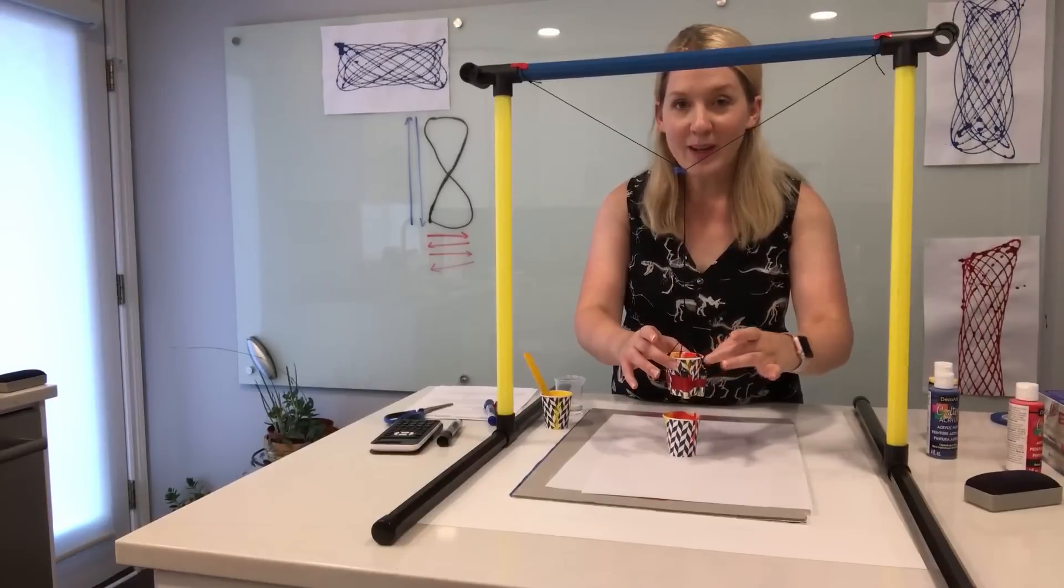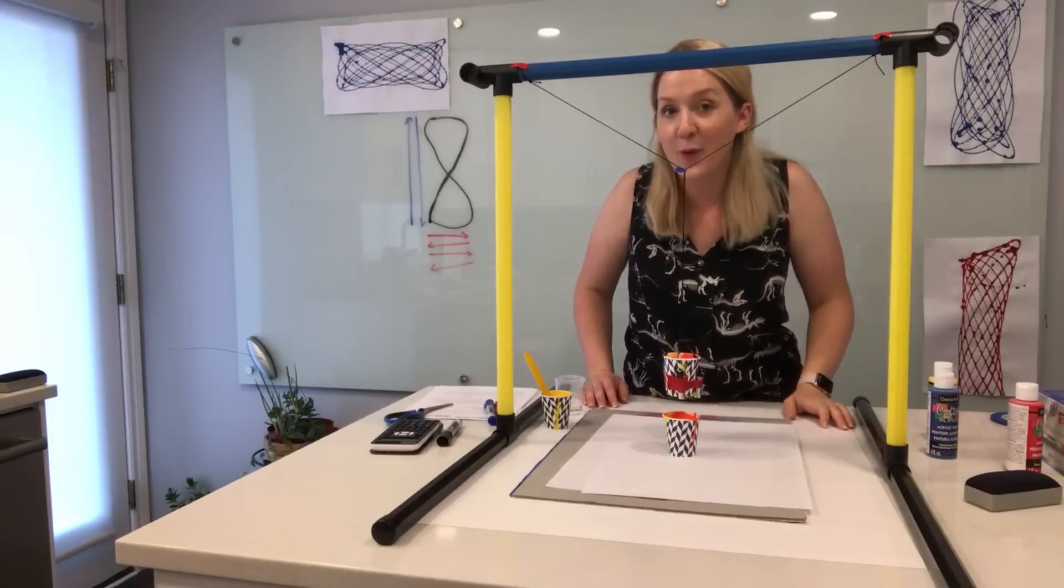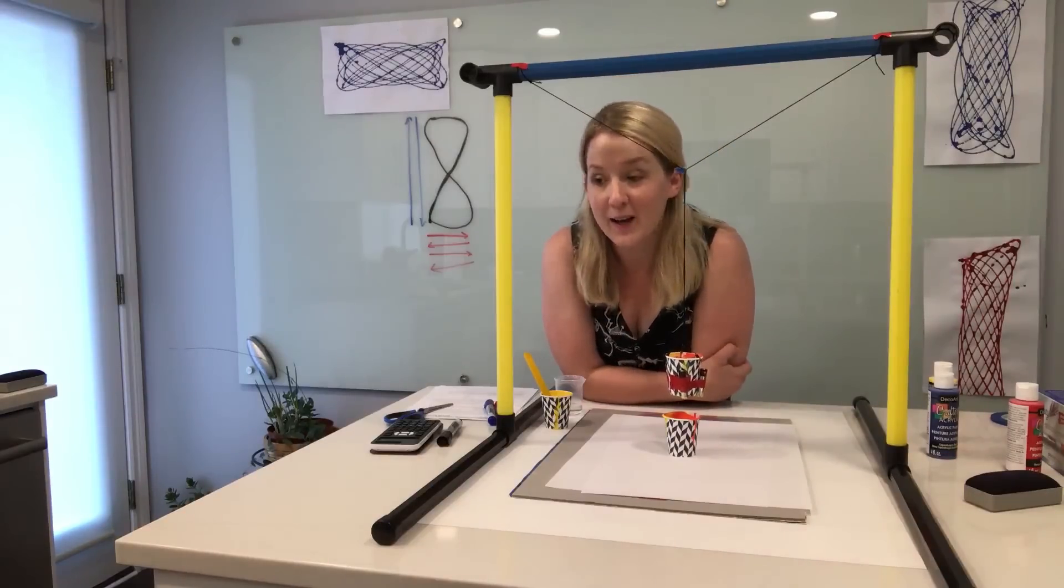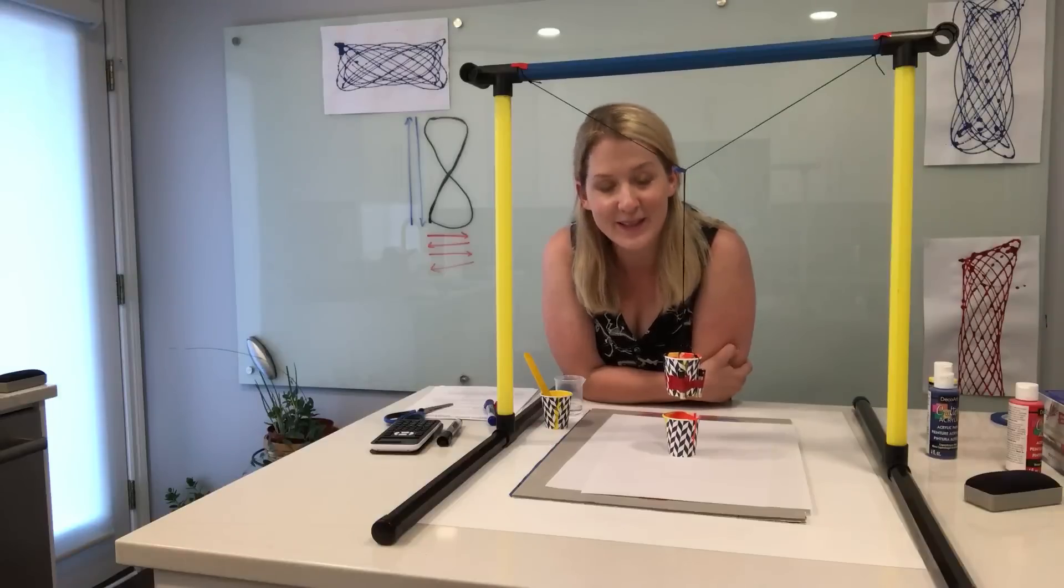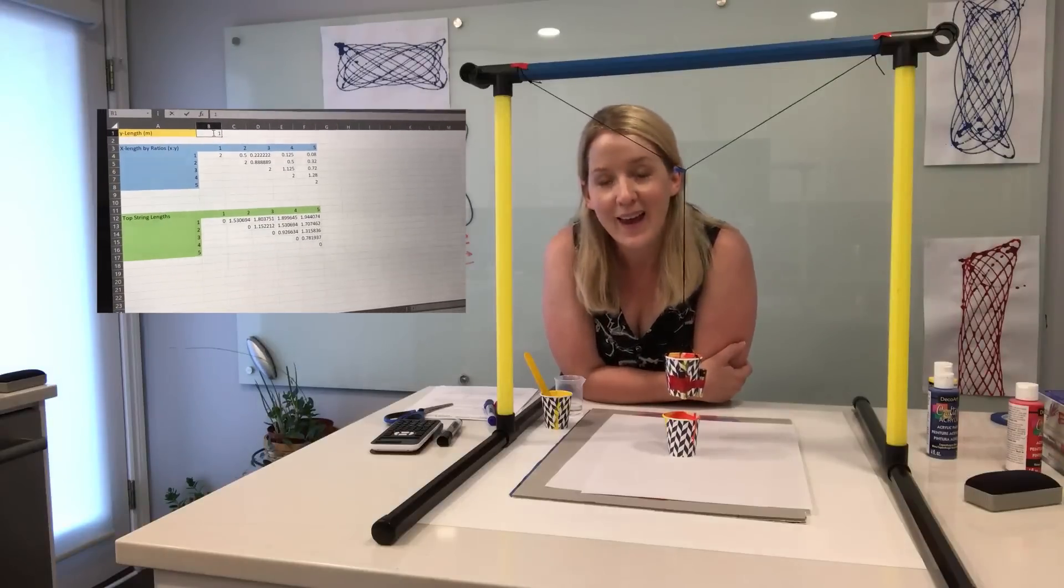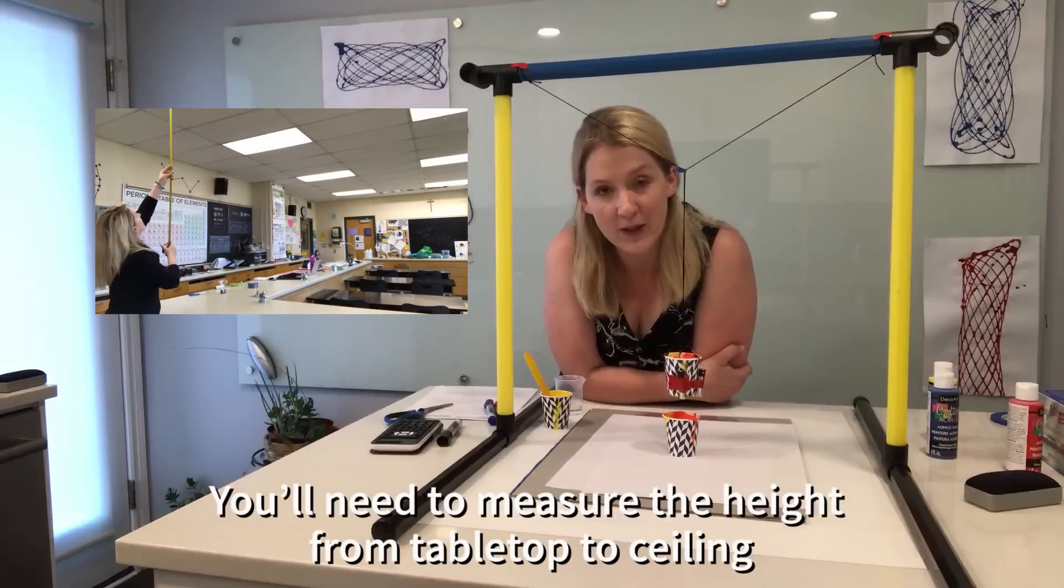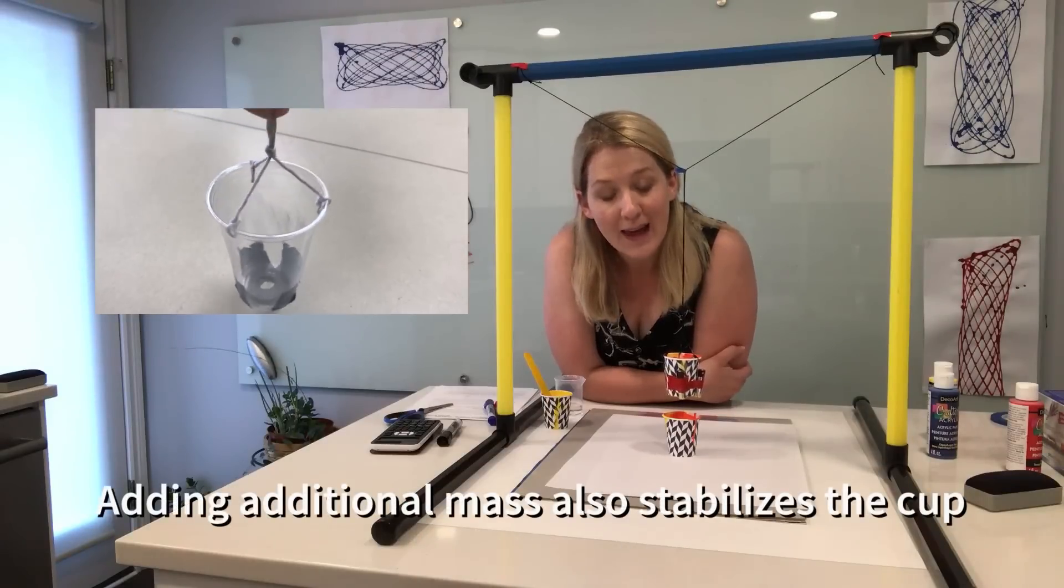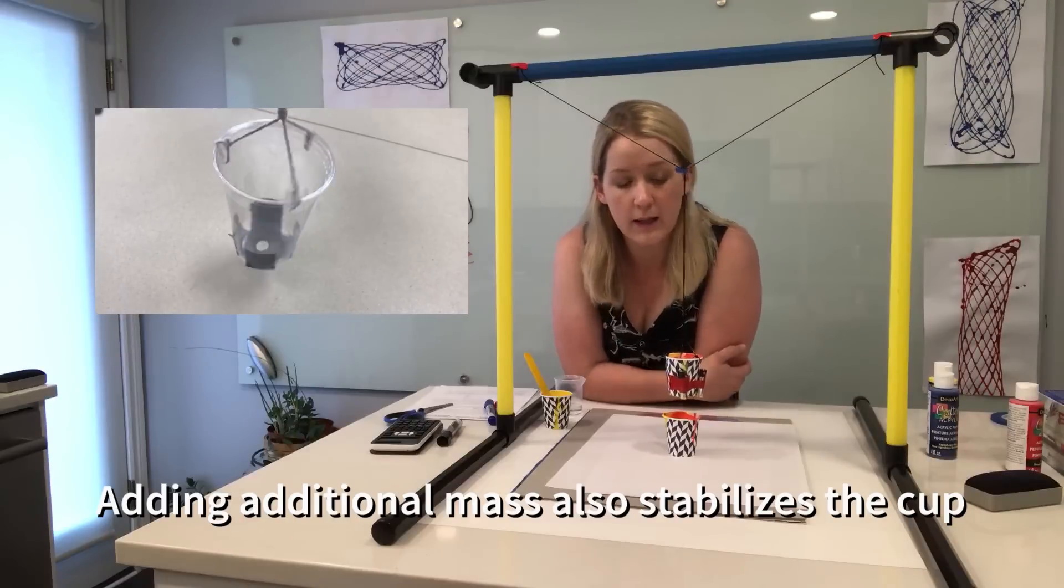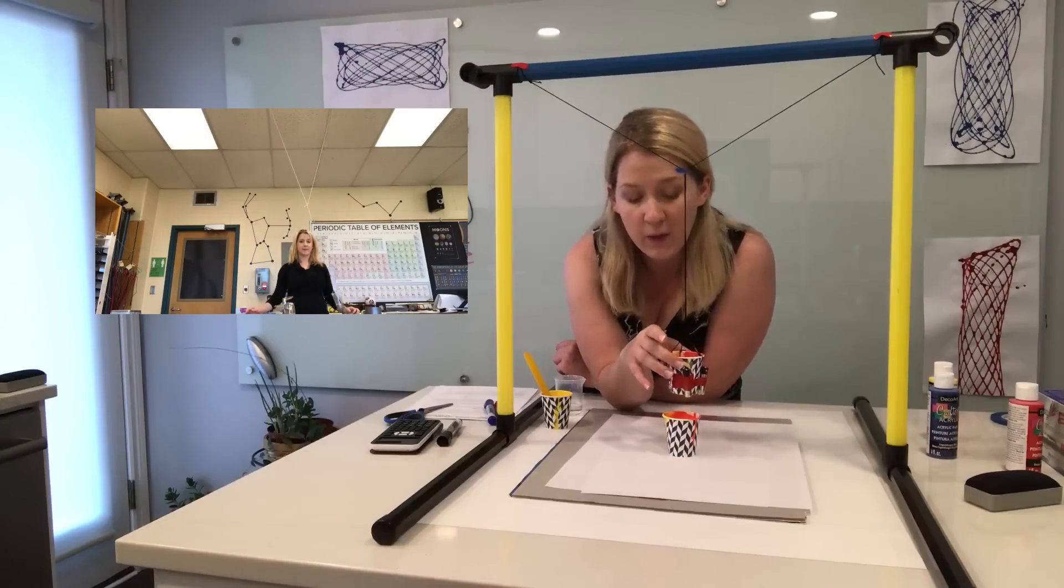So one way to approach making the patterns with your students is to have different stations set up for each of the different ratios. So what I did the first time that I was experimenting with this with my students is I set up all of the ratios in advance using the spreadsheet that you'll get. And I calculated and I cut all of the pendulums to length.